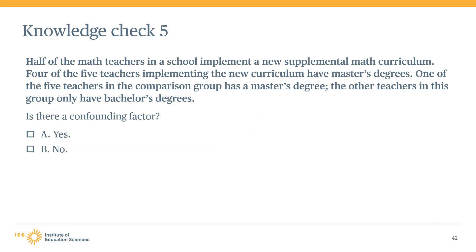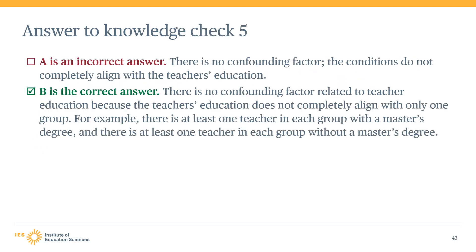Knowledge Check 5: Half of the math teachers in a school implement a new supplemental math curriculum. Four of the five intervention teachers have master's degrees. One of the five comparison group teachers also has a master's degree; the other four only have bachelor's degrees. Is this a confounding factor? The correct answer is No. There is no confounding factor related to teacher education because the characteristic does not completely align with only one group — at least one teacher with a master's degree and at least one teacher without a master's degree appear in each group.